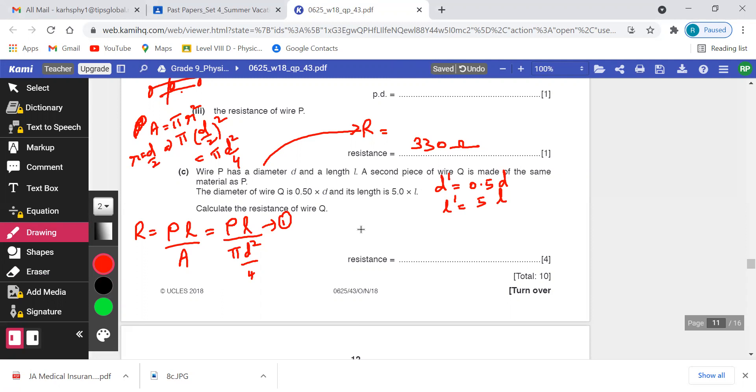We know R' for Q. R' for Q is also ρ because they are made of the same material, so the density will be the same. ρ times L' by A'. I can write this as ρL' by πD'²/4. Now we know what D' and L' are. Substituting: ρ times 5L by π(0.5D)²/4.